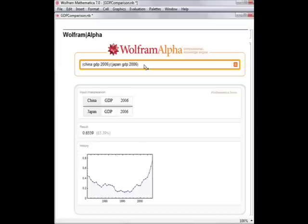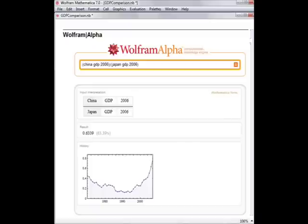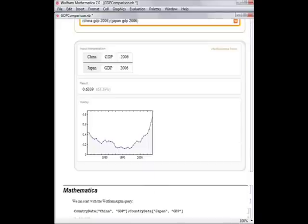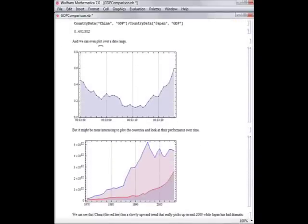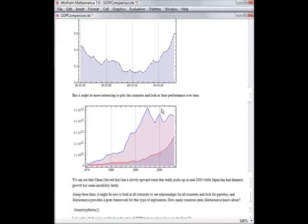The last example I have is one of GDP. In WolframAlpha, we can say show me China's GDP in 2006 divided by that of Japan's. I get this nice result and the history, I get a graphic to show me that also. I can actually do some other exploration as well. I want to see the plot over the date range, which is here, but I want to actually go a step further and take a look at the plot of the countries individually and look at their performance over time.